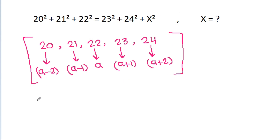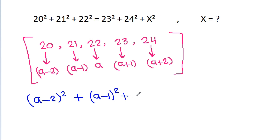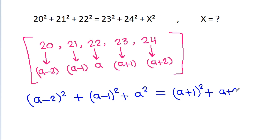So, 20 is (a−2) squared, plus 21 is (a−1) squared, plus 22 is a squared, it is equal to 23 is (a+1) squared, plus 24 is (a+2) squared, plus x squared.